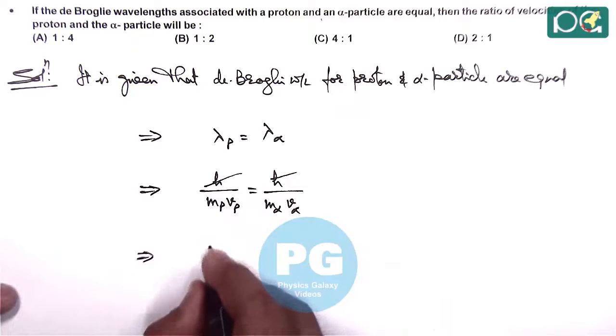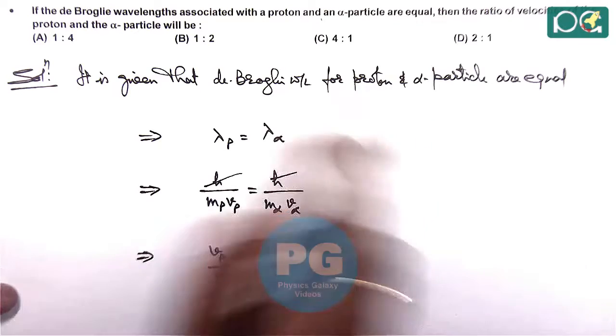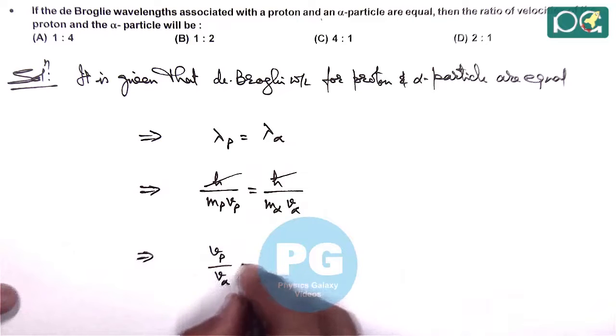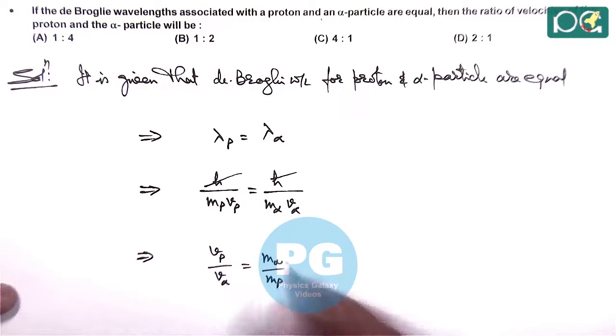v_p/v_α, which we need to calculate, equals m_α/m_p. As we know, the alpha particle is four times heavier than the proton, so we can write 4m_p/m_p.